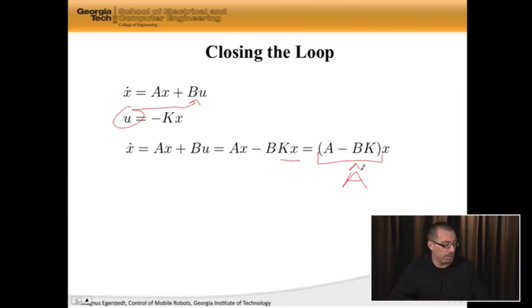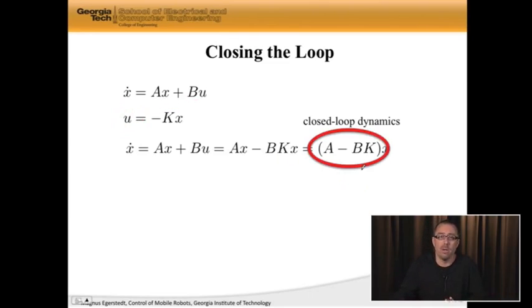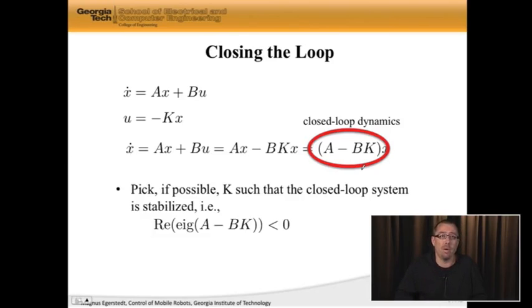And if we call this A hat, we all of a sudden have a new system matrix. And our job is to make A hat as pretty as possible. And in particular, A hat is known as the closed loop dynamics. Because now, we have closed the loop of the system. We're feeding back the state information into the system. And in that way, we're getting x dot is A minus BK times x. And the control design task, from a stability point of view, is simply pick, if possible, K such that the closed loop system is stabilized. And luckily for us, we now know exactly what this means. It means that the real part of the eigenvalues of the closed loop dynamics, A minus BK, has to be strictly negative.